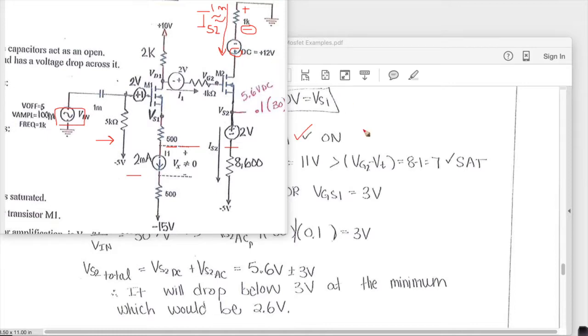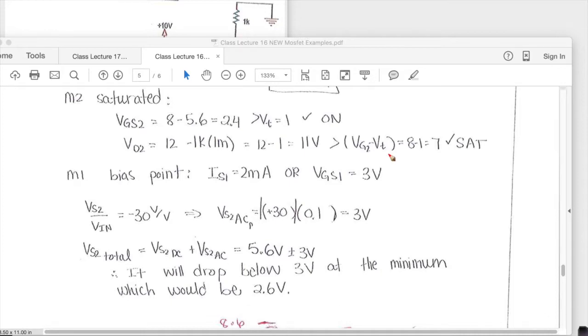And so we have a minus 1 milliamp times 1k which is minus 1 plus 12 and so we get a value of a plus 11 and that is greater than VG2 minus VT. And VG2 minus VT is 7 so that is actually the condition that is met and so that has solved the, improved that M2 is saturated.